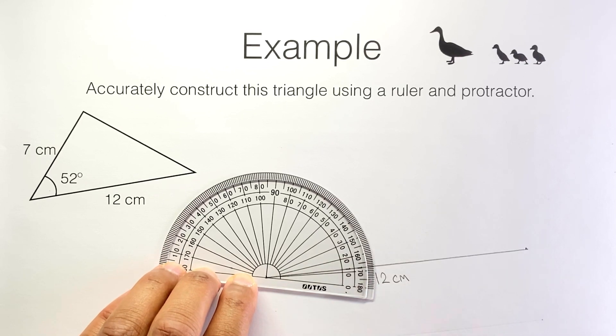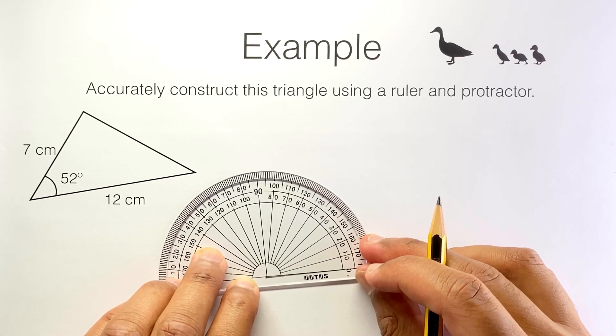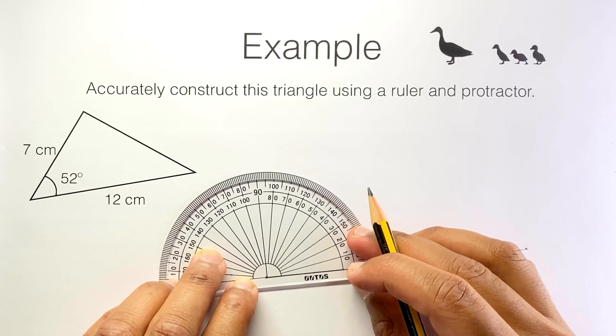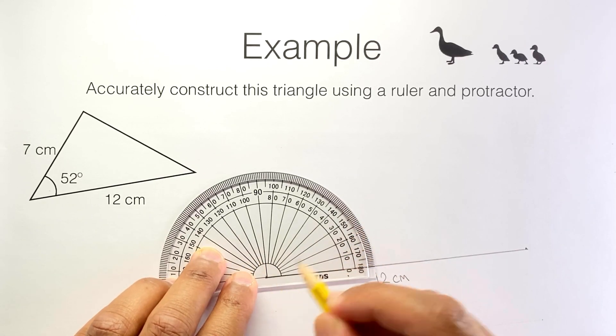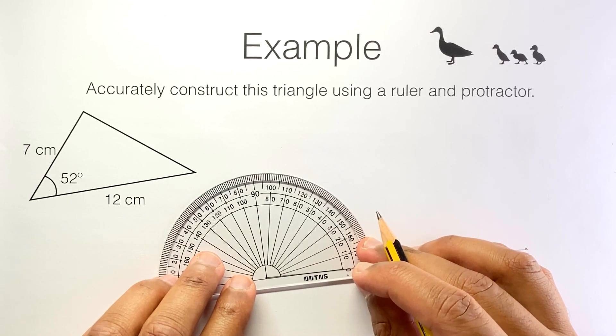Now I need to line up the zero degree mark on the protractor with the 12 centimetre side I've just drawn. So I need to rotate it like this so that the base line on the protractor is in line with the side I've just drawn and keep that centre point at the end point of the line. So this is what it should look like.